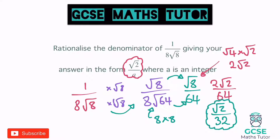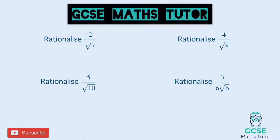You're going to have a go at a few questions. Make sure you're following this process — rationalising the denominator by multiplying the top and bottom by whatever that root is. So here's some for you to have a go at — pause and have a go. Rationalising the first one: times the top and bottom by root seven, and we get two root seven over seven — that's the final answer.